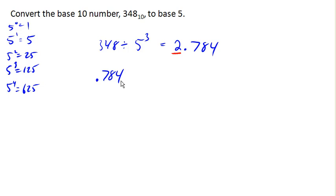So next, to get our next value, we're going to multiply this by 5. This is going to shift us in our place value. So multiplying this by 5, we get 3.92.